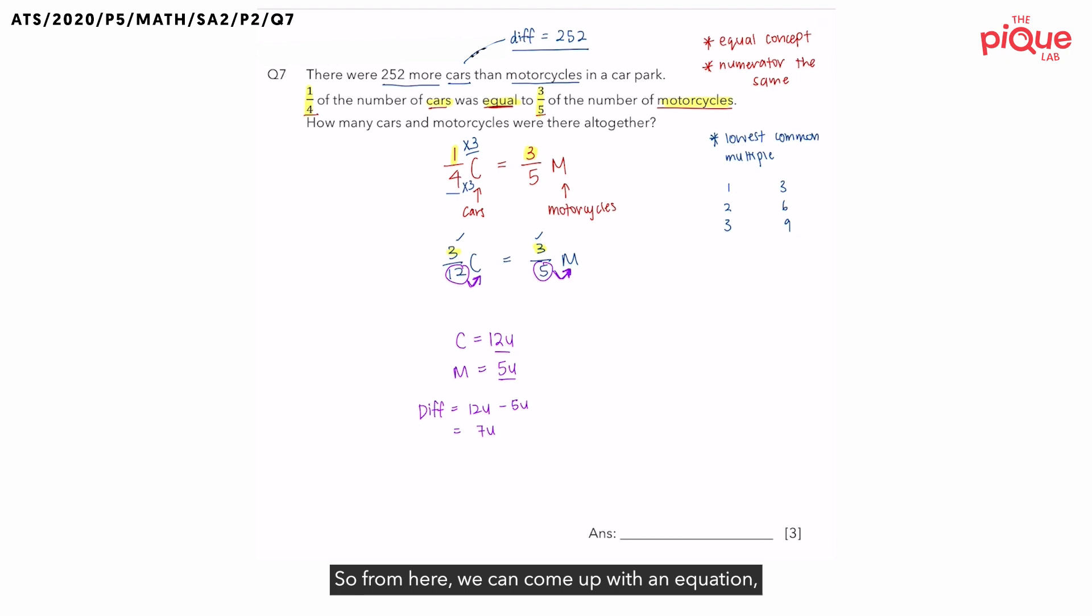So, from here, we can come up with an equation where 7 units is equals to 252. Now, if 7 units is equals to 252, how do I find what is 1 unit? We would take 252 divided by 7 to give us 36.